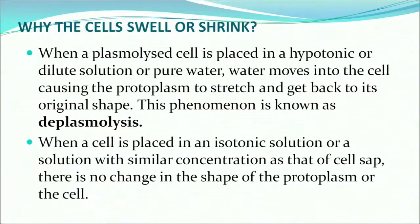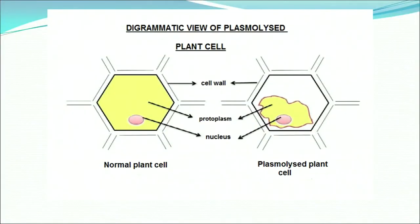When a plasmolyzed cell is placed in a hypotonic or dilute solution of pure water, water moves into the cell causing the protoplasm to stretch and return to its original shape — that is called deplasmolysis. When a cell is placed in an isotonic solution with similar concentration as the cell sap, no change in the shape of the protoplasm or cell takes place. Plasmolysis can also be described as the process of shrinkage of the cell against the cell wall.